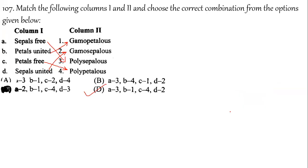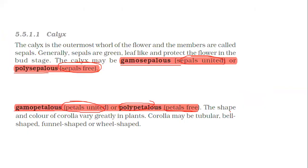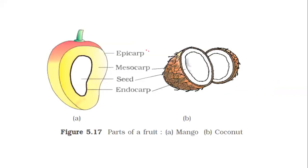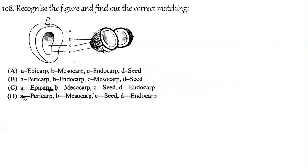The correct answer for question 107 is option D. Question 108 is also a diagram from NCERT. The outermost portion is the epicarp, then the mesocarp, then the endocarp, and finally the seed inside. Based on this labeling: A is the epicarp, D is the endocarp, C is the seed, and B is the mesocarp. The correct answer is option C.